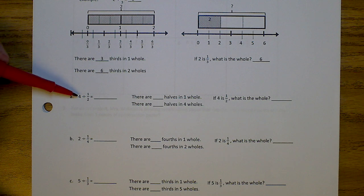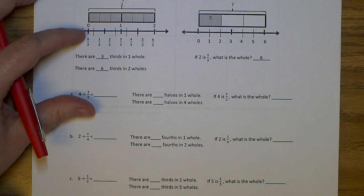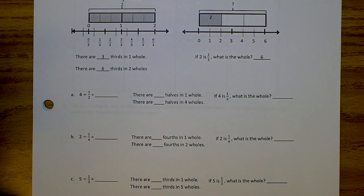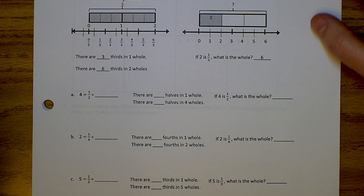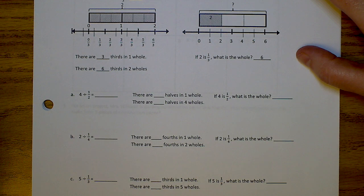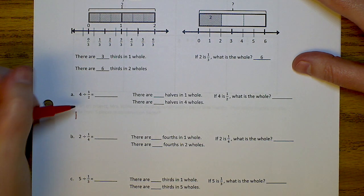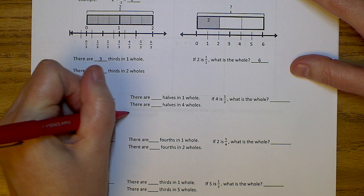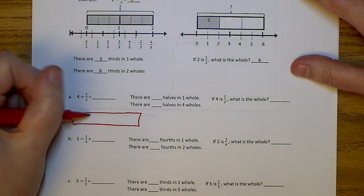If you look at A, it says 4 divided by 1 half. If I were to draw a tape diagram, how many boxes do you think it would have? Four. Okay, why would you do 4? You're going to make 4 boxes because that's your whole number, which you're going to need to do on your assignment.